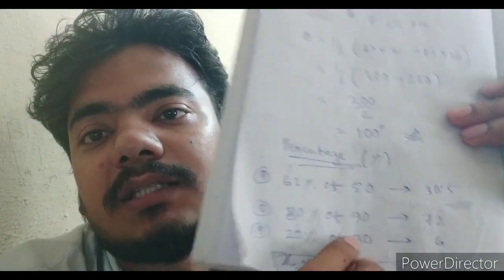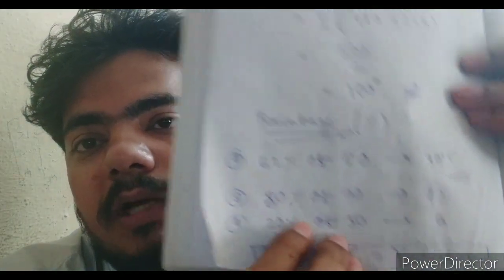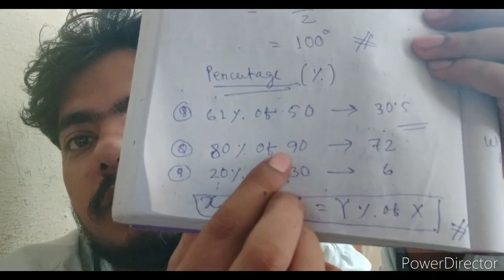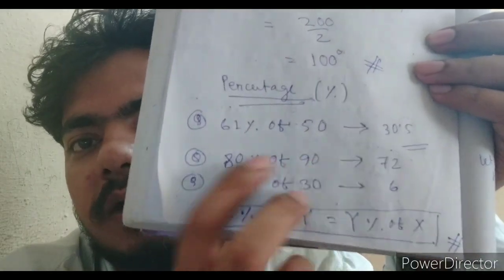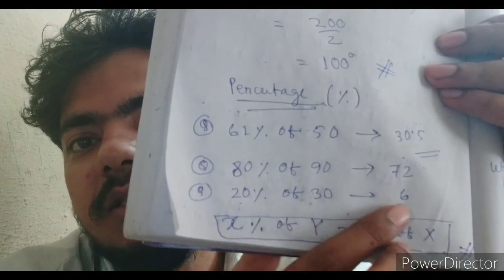Another shortcut: for something like 80 percent of 90, just multiply the two numbers and divide by 100. 80 × 90 = 7200, divided by 100 gives 72. Similarly, 20 percent of 30: 2 × 3 = 6, divided by 100 gives 6 — that is 6. This is an easy trick. Sometimes they also ask: you bought a mobile phone for 7000 and sold it for 7500 — what is your percentage of profit? At that point just calculate and compare with 100.